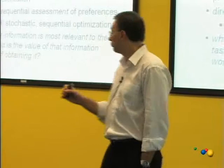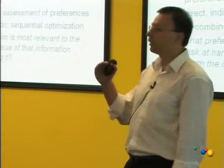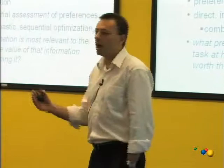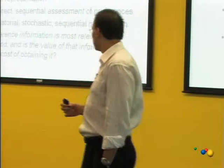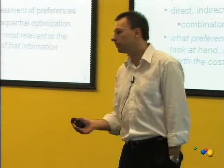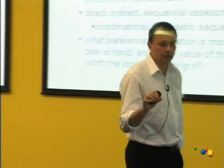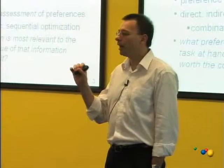A lot of the work I've been doing over the last couple of years has focused on preference solicitation. What I'll be talking about today deals broadly with the problem of preference assessment — either direct assessment or indirect assessment — the sequential or one-shot assessment of individual or organizational preferences, particularly in hard optimization problems such as combinatorial optimization and stochastic sequential optimization. A key question guiding most of what I do is: what preference information is most relevant to the task at hand, and does the cost of assessing or eliciting that information outweigh the value of the information itself?